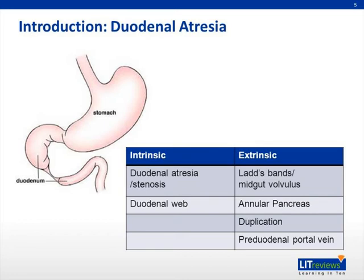Duodenal atresia and stenosis are believed to result from a failure of recanalization of the embryonic duodenum. At five weeks of embryonic life, the lumen of the duodenum is obliterated by proliferating epithelium. Patency of the lumen is usually restored by the 11th week, and failure of canalization may lead to stenosis or atresia. This is distinct from atresia or stenosis of the jejunum and ileum, which are thought to be caused by vascular accidents in utero.